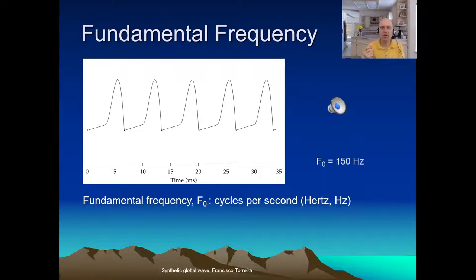So to compute it, you can take a second of speech and count how many cycles occur. But in practice, pitch can change over short segments of time. So it's better just to measure one pitch period or a couple. This one is 6.6 milliseconds. And then use the formula. So the F0 is 1 over the period.